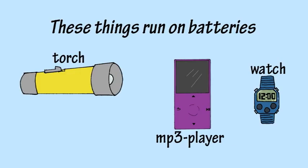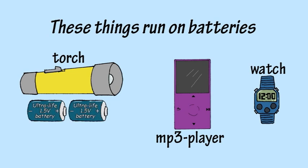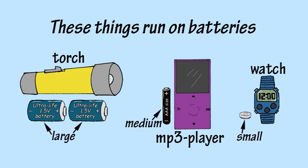Other devices run on electricity supplied from batteries, and these can be safer to handle. For example, this torch runs on batteries. This MP3 player runs on batteries. And this watch runs on batteries. Notice that each device requires different sized batteries depending on its power needs.